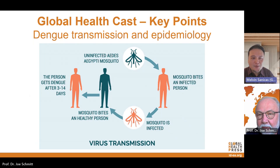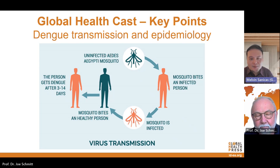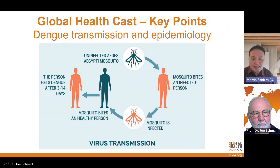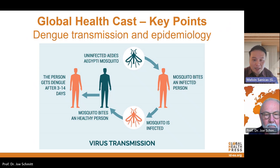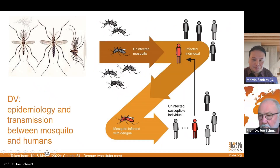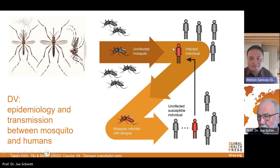Today I will be presenting a short summary on the epidemiology of dengue. As you can see on this slide, the dengue virus is primarily transmitted from person to person through the bite of an infected Aedes aegypti or Aedes albopictus mosquito. Humans are the primary host and source of the virus, and female mosquitoes acquire the dengue virus through a blood meal from infected humans.